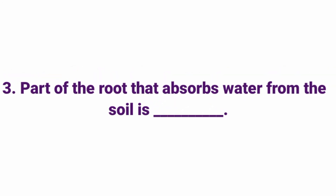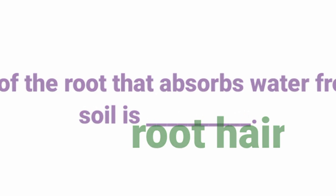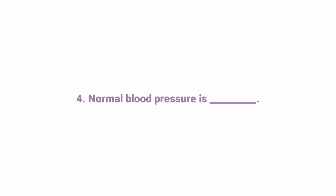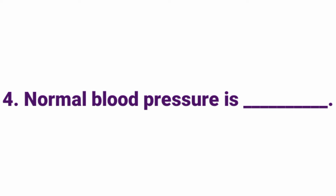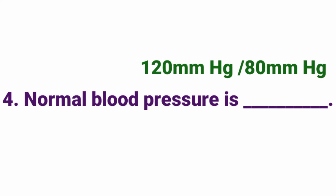Part of the root that absorbs water from the soil is ___. Answer: Root hair. Normal blood pressure is ___ — Answer: 120 mm Hg / 80 mm Hg.